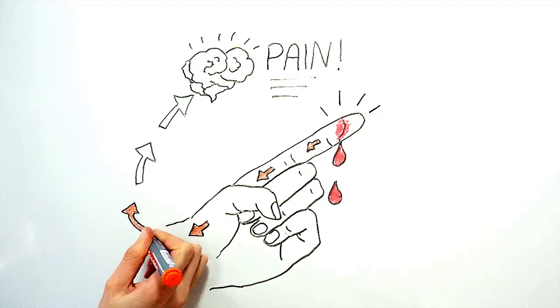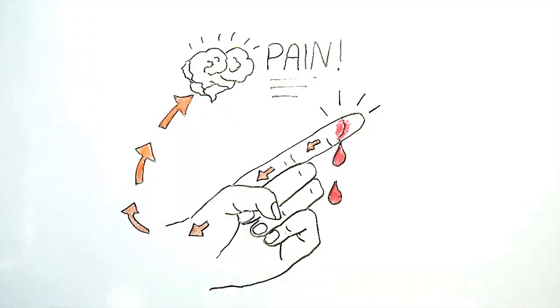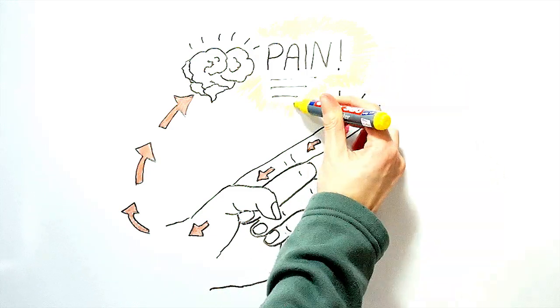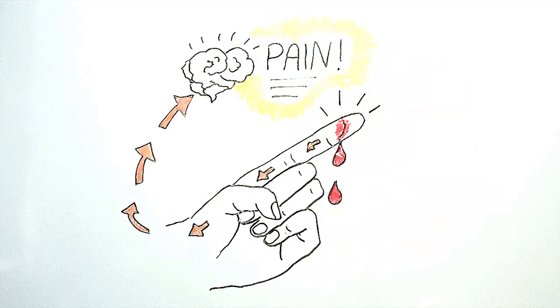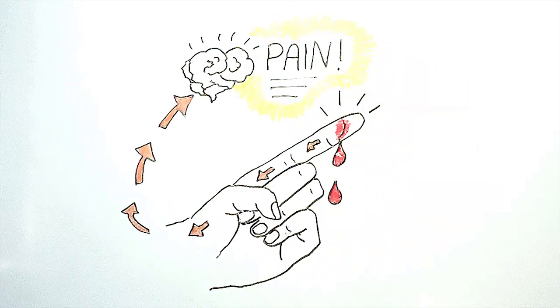A brain is pretty easy to find, it's got lots of nerves and blood leading to it, and it's usually pretty big. Plants do not have nerves or a brain, and so plants cannot feel pain.